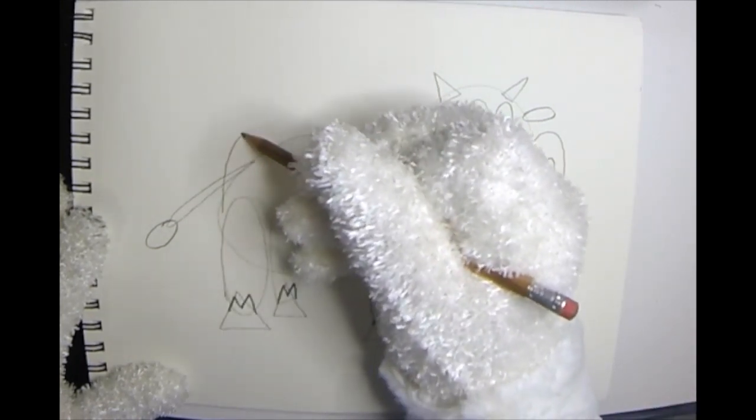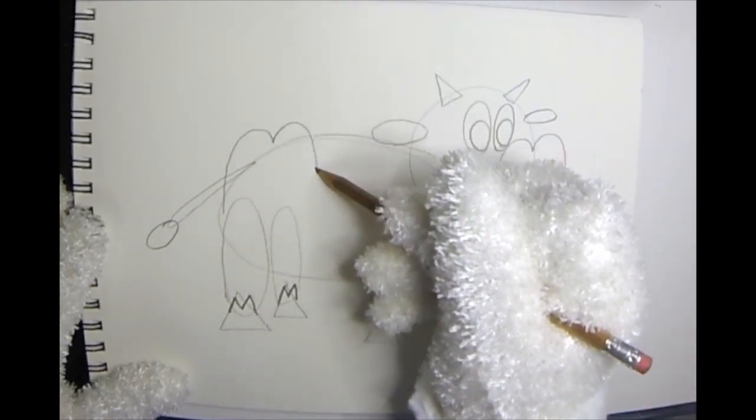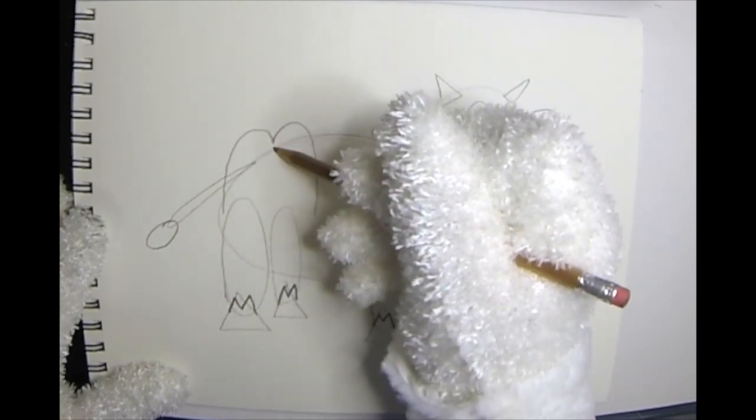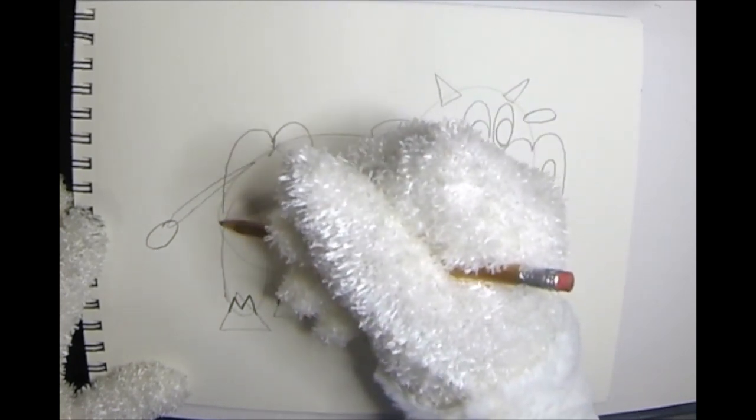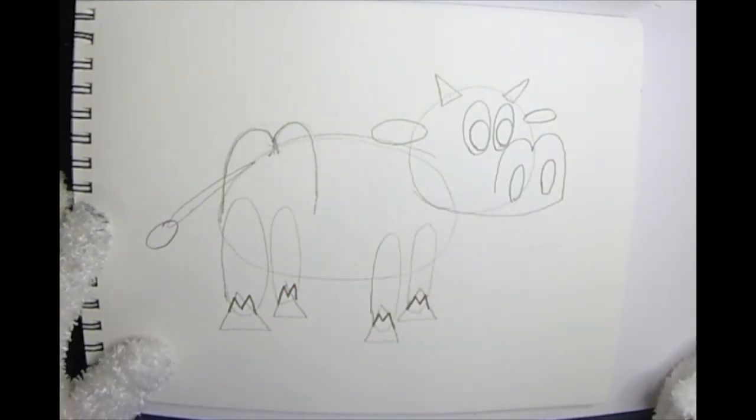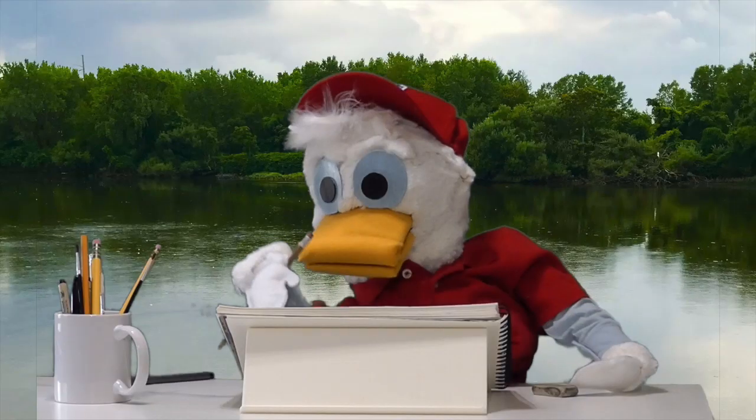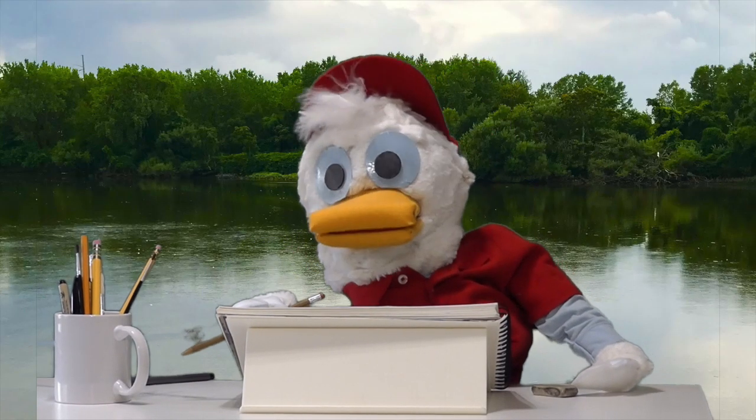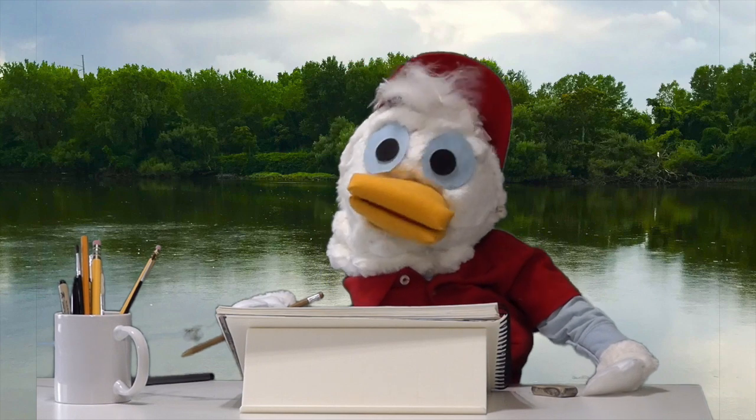Now we're going to do one more big letter M, another round one right on the back of the cow, just like this for the hips. The top of that M is going to curve and touch the back of the oval. Right above those back legs. There it is. All right. That's it for the pencil lines.